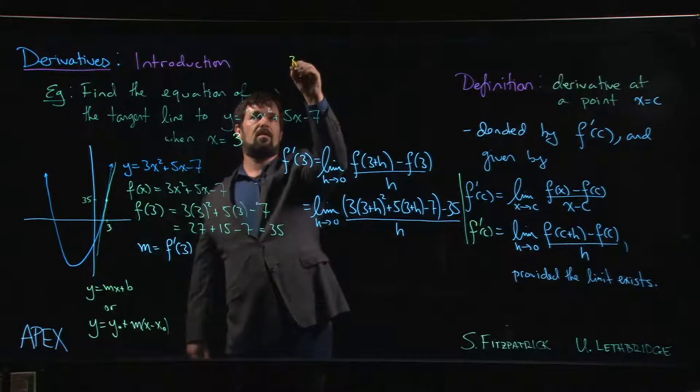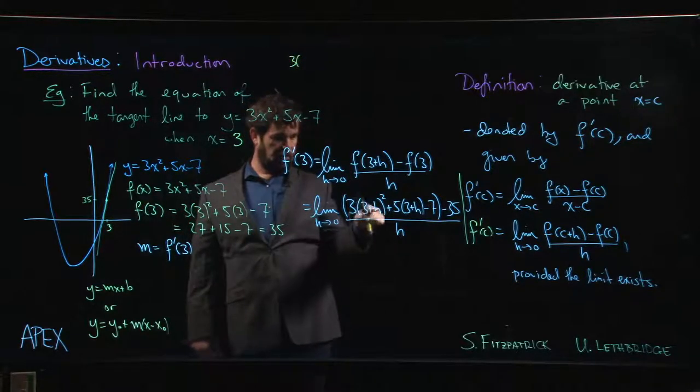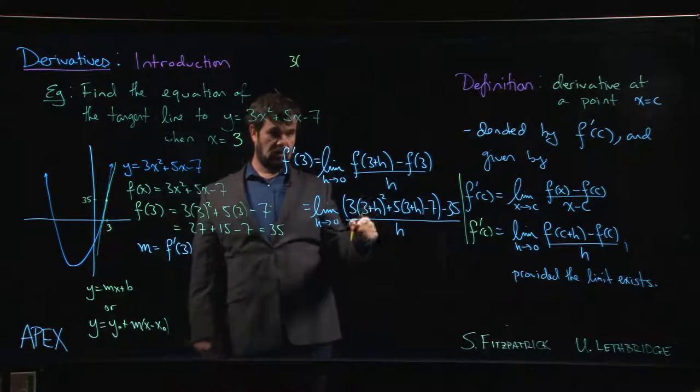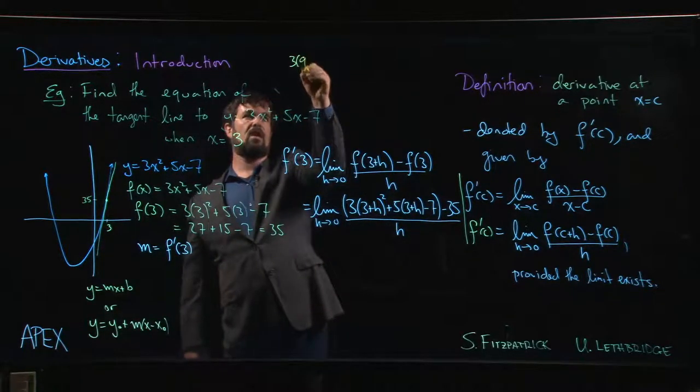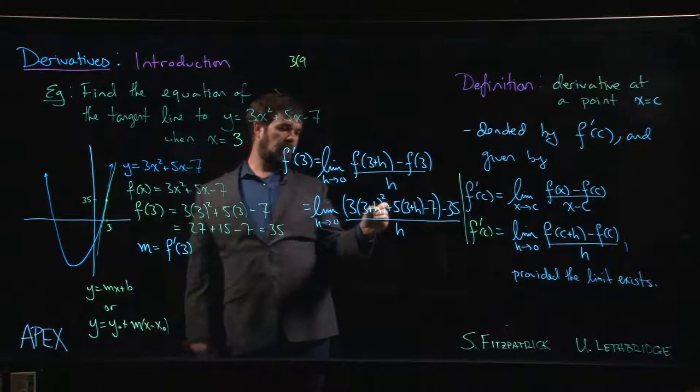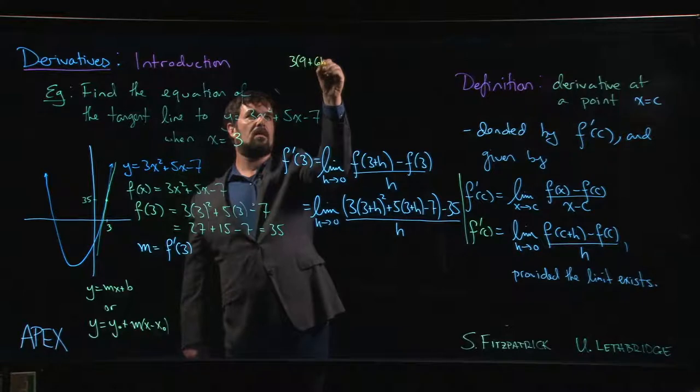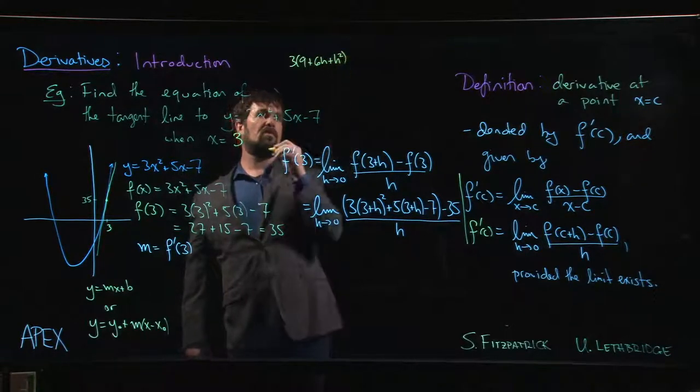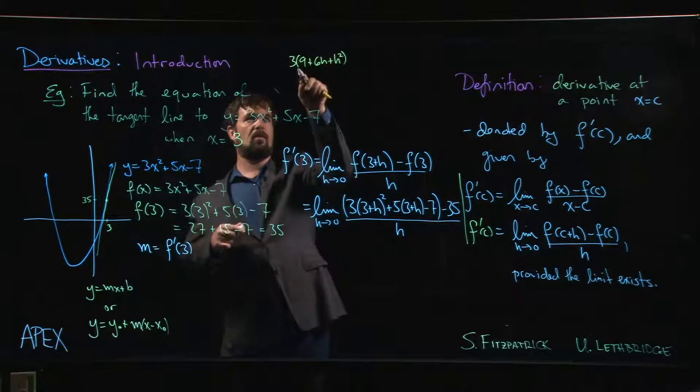We say okay, what do we have? Three times, so if we square 3 plus h, again be careful, we're not just squaring the two terms. It's (3 plus h) times (3 plus h). We need to use FOIL. So 3 squared is 9, 3 times h is 3h, plus another one right, 6h, plus h squared. Okay, and so this is what we get from doing (3 plus h) times (3 plus h), which is (3 plus h) squared.